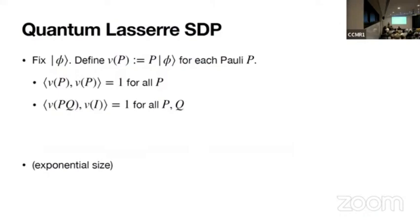All right, so what is quantum lasserre? Let's fix the state phi and define a function from Pauli to vectors. Define v to be P times the state phi. And when you define the function v this way, it will satisfy the constraints here.